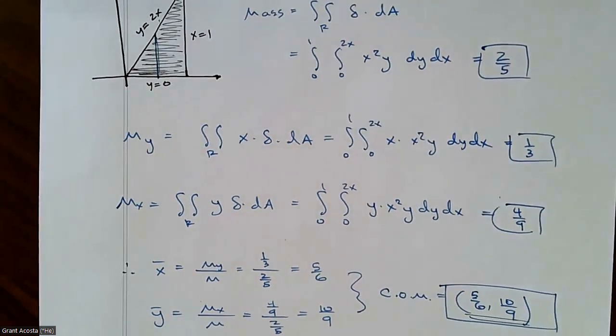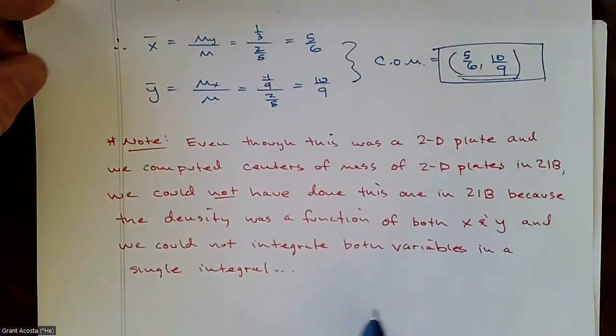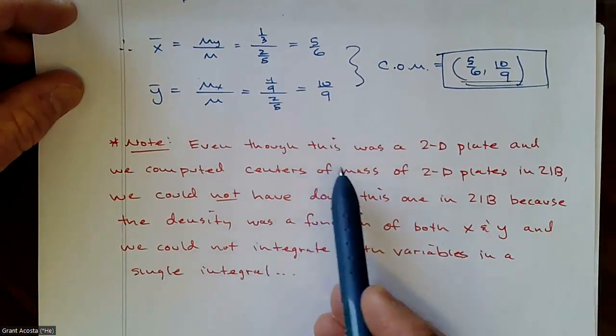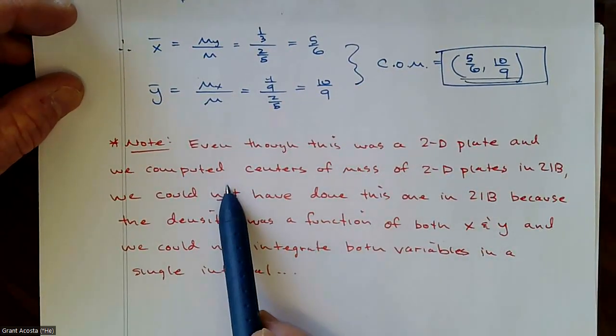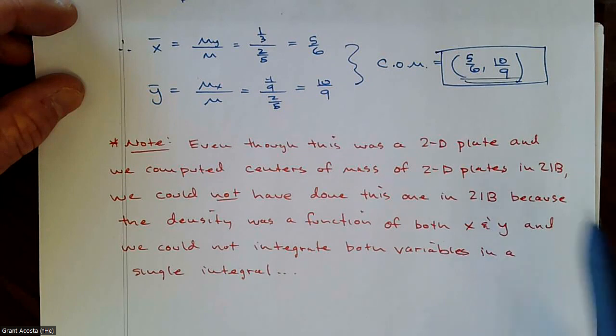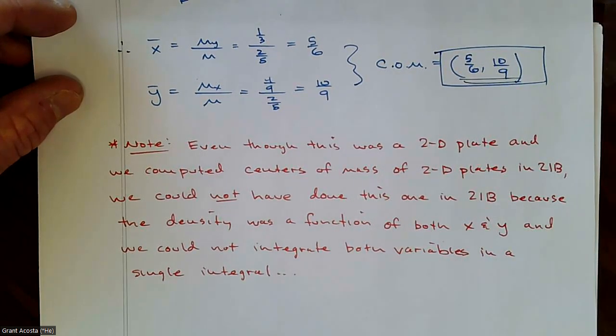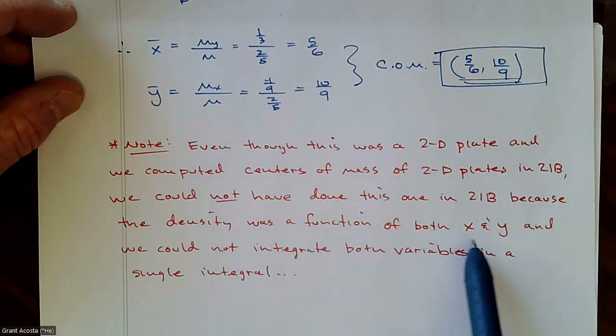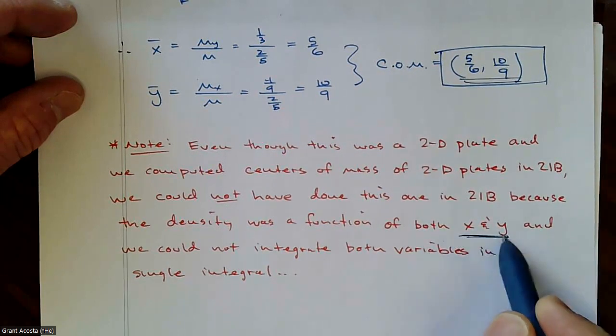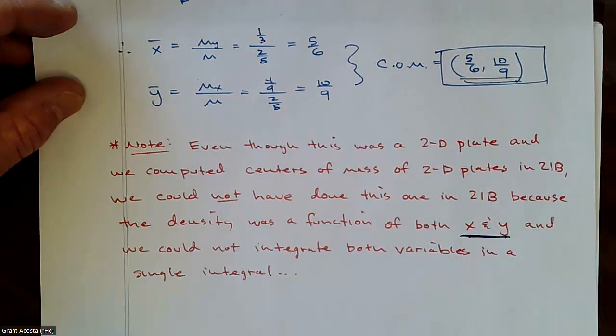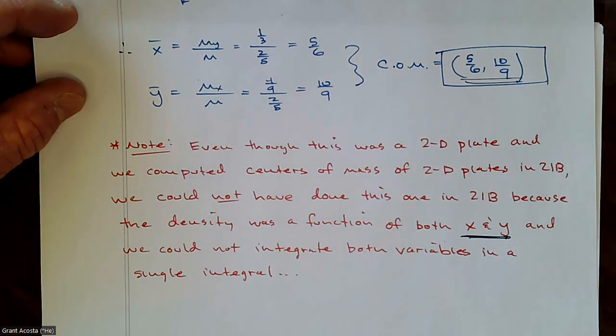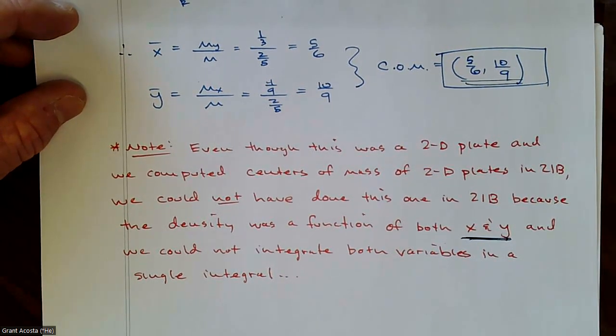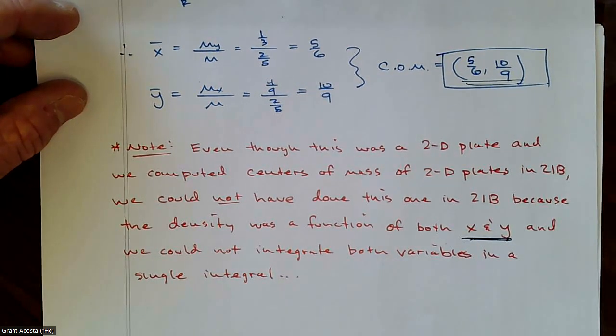And so just making a comment, same comment I made as we started the problem. Even though this was a 2D plate, we computed the center of mass in 2D plates in 21B, we could not have done this because the density was a function of both x and y. And we couldn't have integrated with respect to those two variables in a single integral. So that's one advantage now of double integrals.